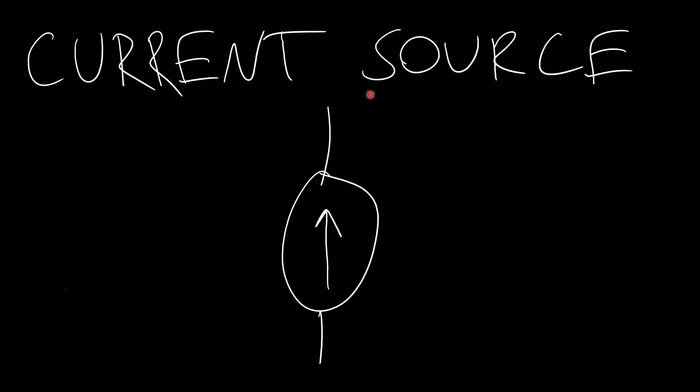All right, in this video we will talk about current sources, a source that provides a constant current instead of a constant voltage. Now, these are not really as common as voltage sources and they're not really a single physical thing like a battery. You actually need to build a circuit made out of other parts to create something that effectively acts like a constant current source, but you still might encounter them.